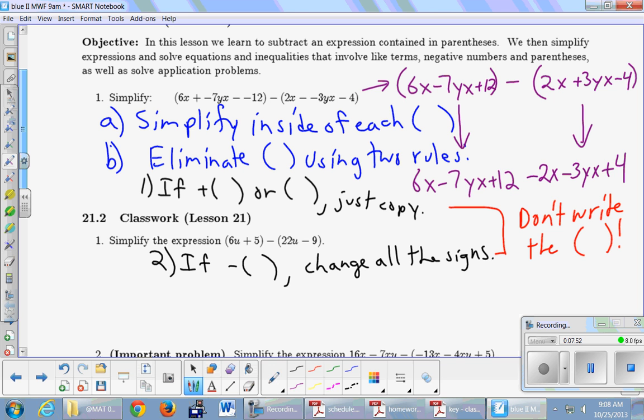And now that we've gotten rid of the parentheses, this now looks like a problem that we've solved before. So we'll just go ahead and write our final answer down here. What are the like terms? 6x goes with subtract the 2x, and we get 4x. That's these two. And then minus 7yx goes with minus 3yx, and we get negative 10yx. That's these two. And then finally, 12 and 4 plus 16. So that last thing right there is our simplified final answer. Questions?